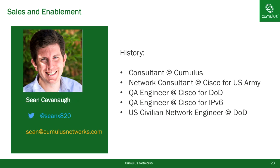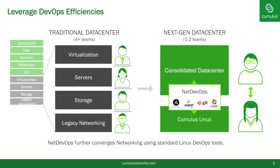Our flagship product, Cumulus Linux, is uniquely positioned to lead NetDevOps because the interface is Linux. This allows tools like Ansible to just work as they do for servers. Also, when using examples provided online, especially from repositories like Ansible Galaxy, they just work. Is there an example playbook that configures NTP or Nagios? It will just work on Cumulus Linux.